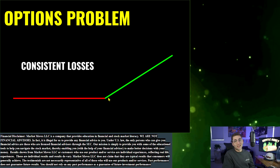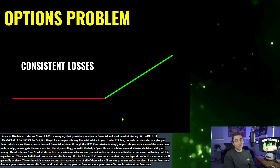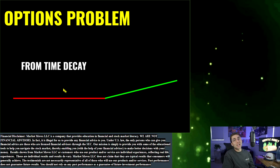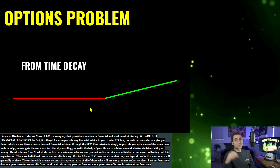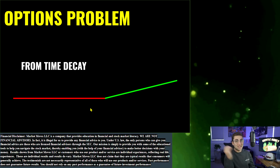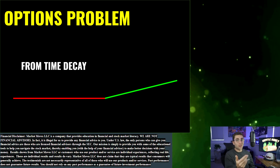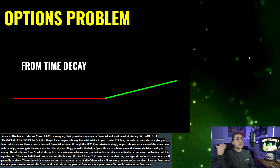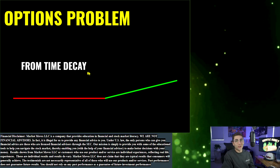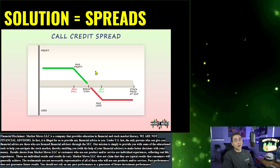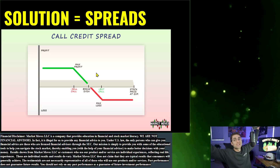Do you know why that upside is getting smaller? The amount you're making is getting smaller every day — it's time decay. It's what's killing your accounts, it's what's making sure you're not going to succeed this year, next year, and why you're going to have to go through that long learning curve. Time decay is a killer. So how do we beat time decay? Spreads.